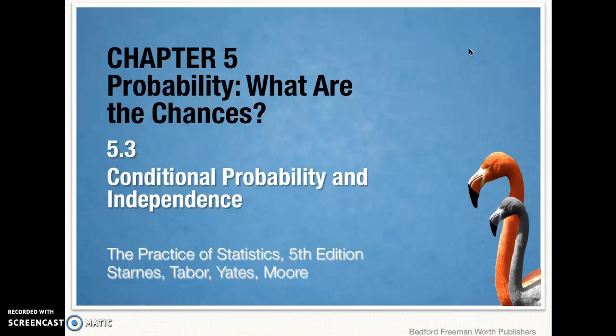Hi ladies and gentlemen, this is Ms. Skokin, back for another round of AP Statistics. This time we're in Chapter 5, Probability, and Section 3, Conditional Probability and Independence.